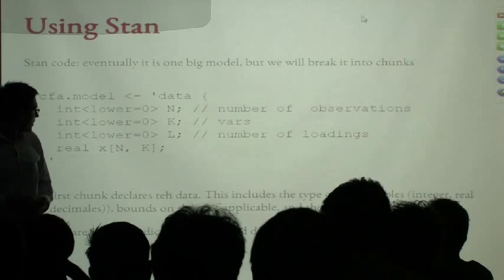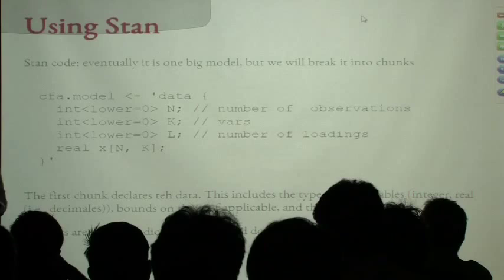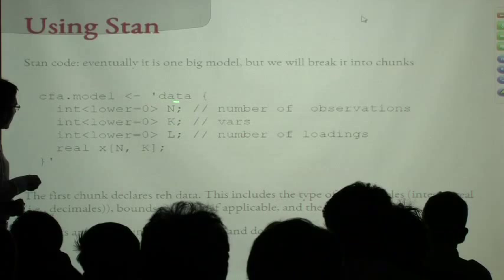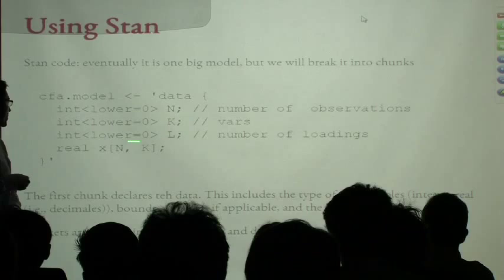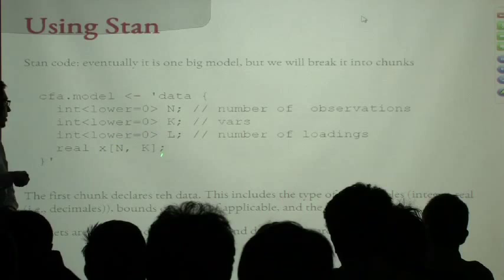I use the same inverse-gamma for factor variance. The factor scores themselves are distributed as normal centered at zero — I'm fixing their location parameter. Each observed variable is distributed as normal: for the first one it's alpha plus the factor (loading fixed at 1), and the others are alpha plus lambda times the factor score. So these will estimate my factor loadings.